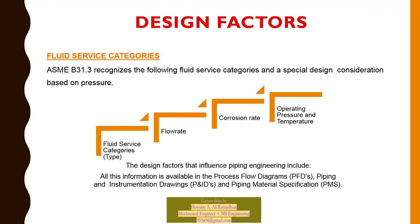ASME B31.3 recognizes the following fluid service categories with special design considerations based on pressure, flow rate, closure rate, and operating pressure and temperature. The categories include Category D for utility normal process, Category M for high-pressure utility, and others — each with specifications and limitations on the containment system and characteristics.